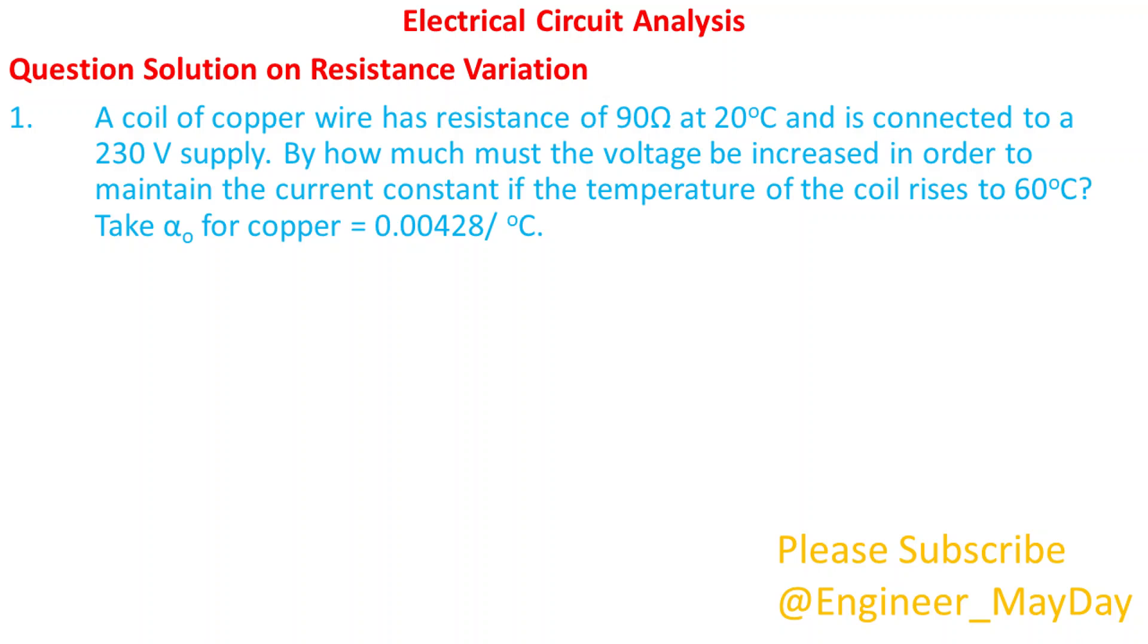By how much must the voltage be increased in order to maintain the current constant if the temperature of the coil rises to 60 degrees Celsius? Take alpha 0 for copper equals 0.00428 per degrees Celsius.